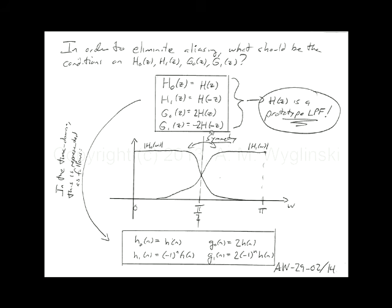Why do we call these quadrature mirror filters? They mirror around π/2. There is perfect symmetry between the high pass and low pass filters centered at that frequency.